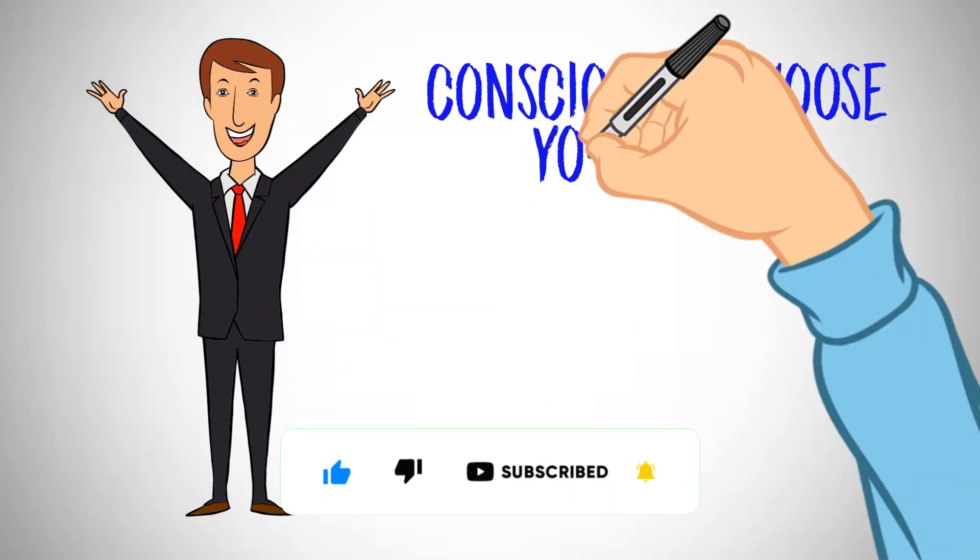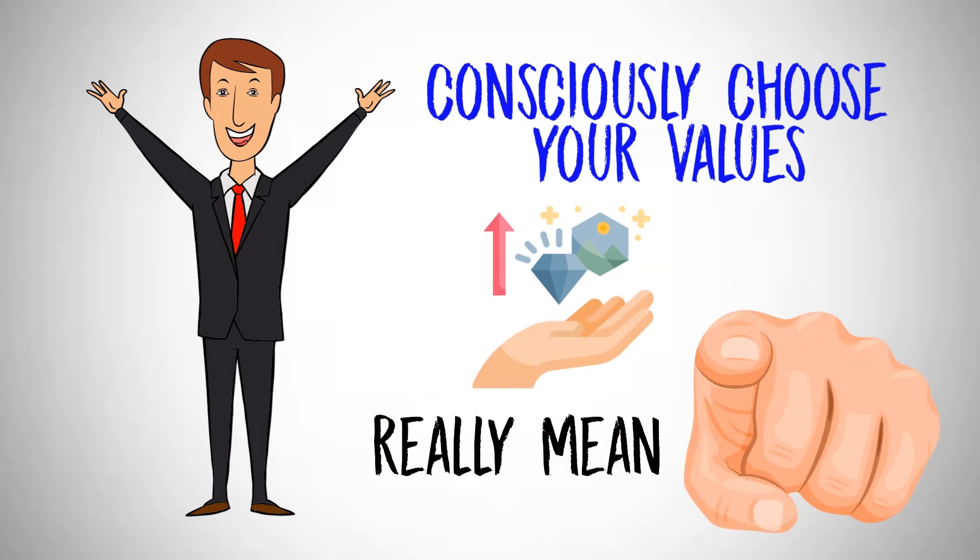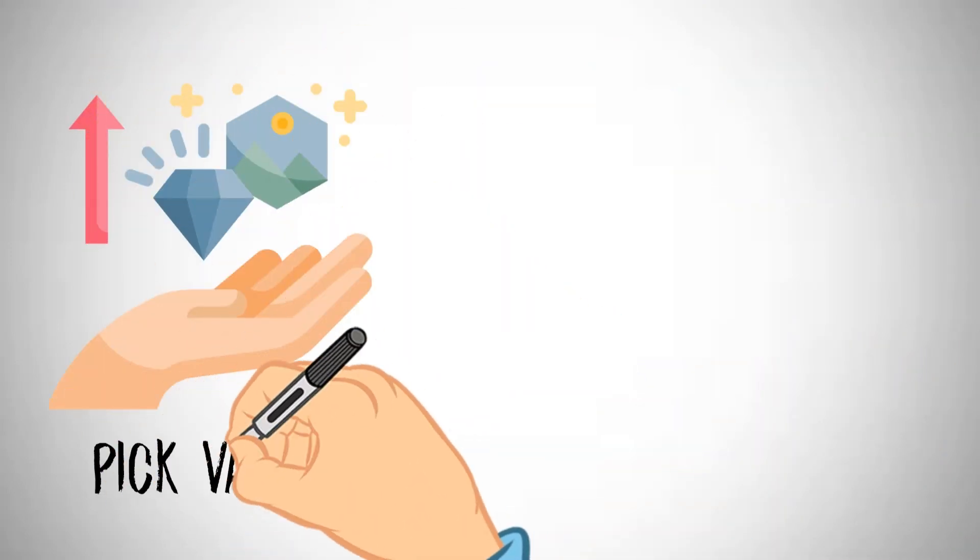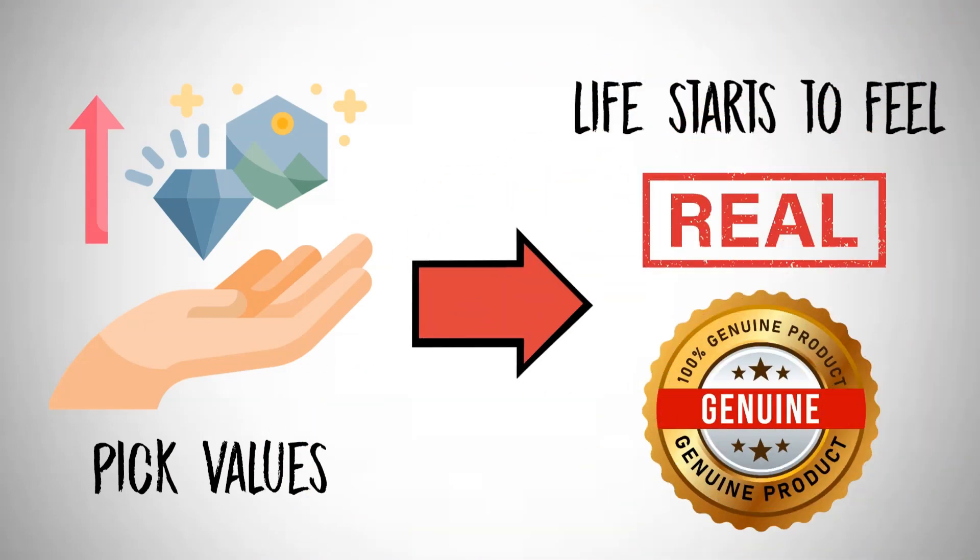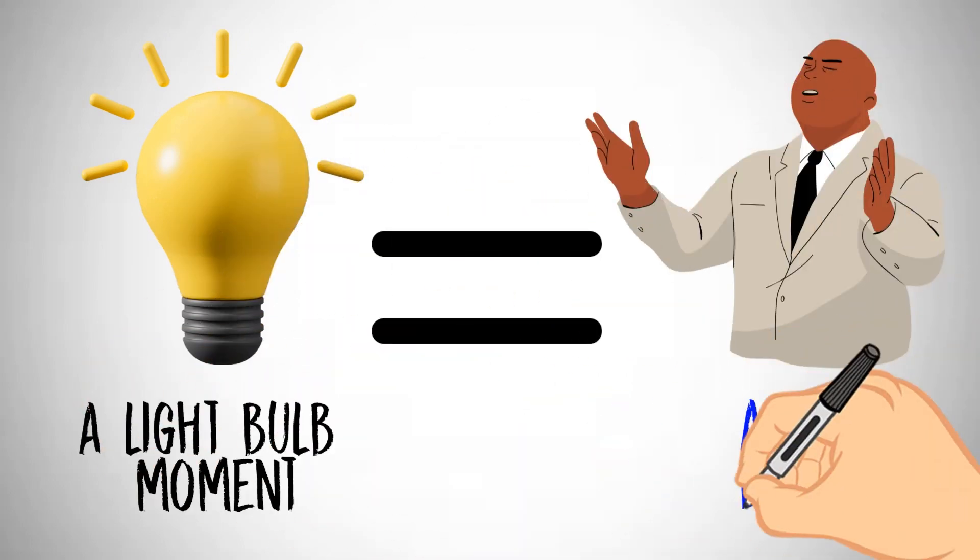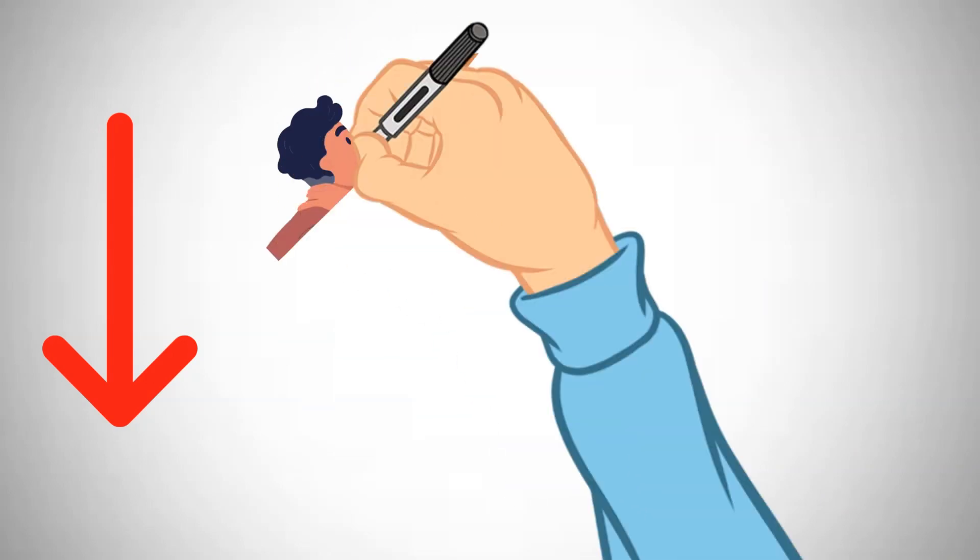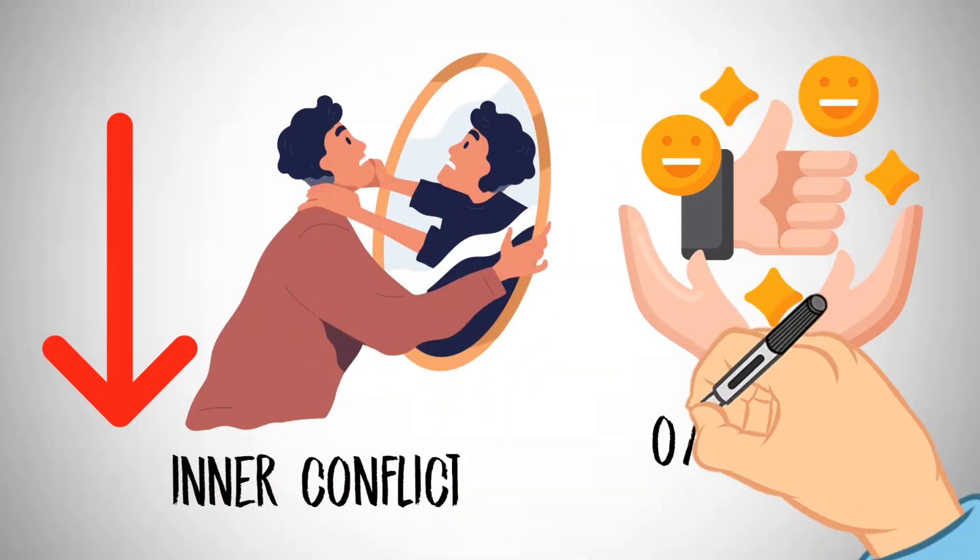He wants you to consciously choose your values, ones that really mean something to you. When you pick values that align with who you truly are, life starts to feel more real and genuine. It's like a light bulb moment where your actions and your beliefs match up. And guess what? That leads to less inner conflict and more overall life satisfaction.